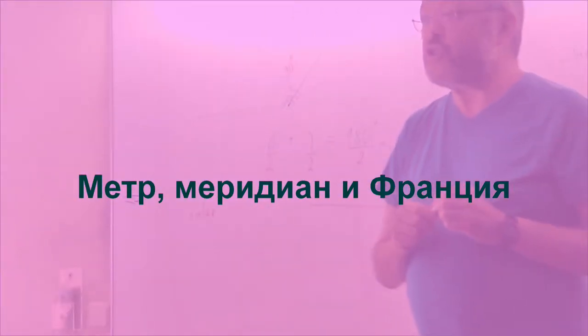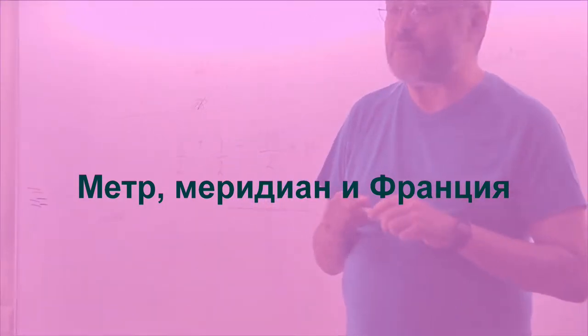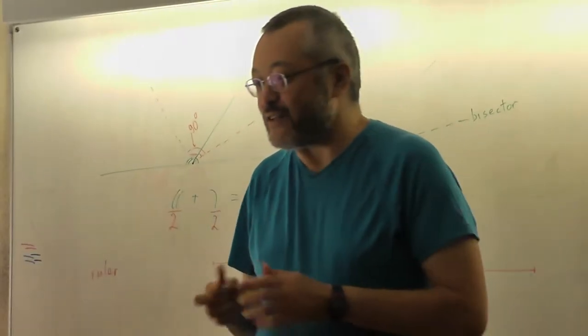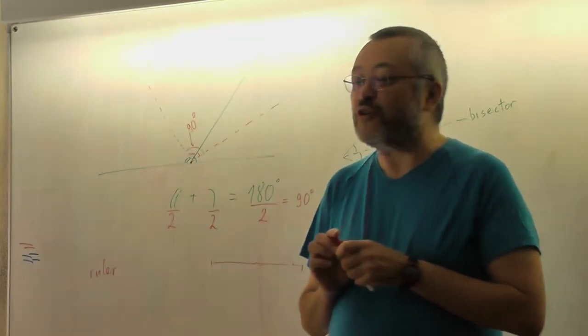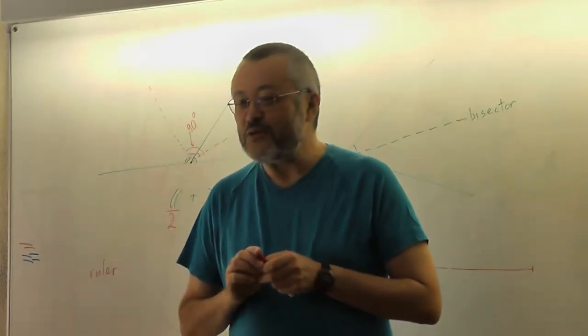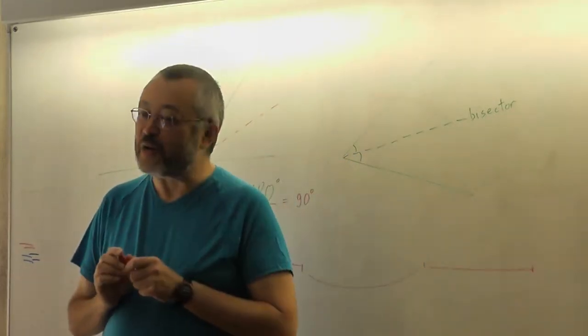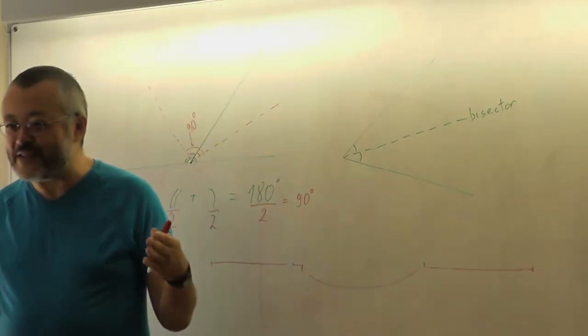One more difficult question. Imagine you have some segment and you have a phone. You speak by phone or by Skype, you cannot send a letter, you just speak by phone. And you want your friend in another city to construct the segment exactly the same. How can you do this? How can you explain that you want a segment of this size?